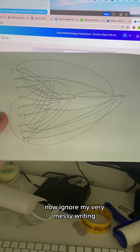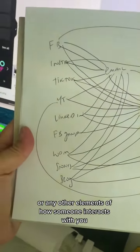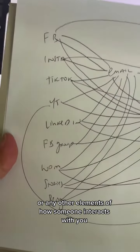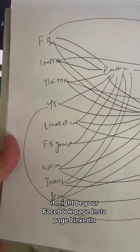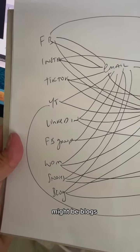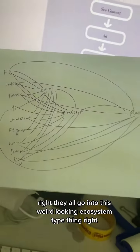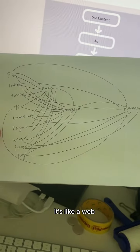It works something like this. Now ignore my very messy writing, but you can see that all of your social channels or any other element of how someone interacts with you—it might be your Facebook page, Insta page, LinkedIn, word of mouth, stories, blogs, it doesn't matter. They all go into this weird-looking ecosystem type thing. It's like a web.